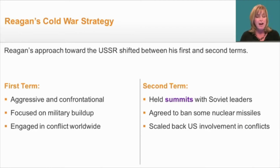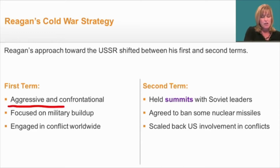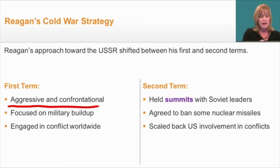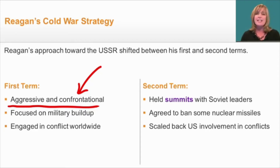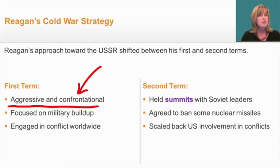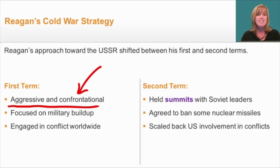Reagan had two separate strategies — one in his first term, and a different approach in his second term. In his first term, he was far more aggressive and confrontational than previous U.S. presidents. For example, he gave a speech telling the people of Eastern Europe that the West had not forgotten them and tried to bring attention to human rights abuses in the Soviet Union, such as imprisoning people for things they write and holding political prisoners for many years. He really tried to draw attention to the differences between a free democracy and life under Soviet control.